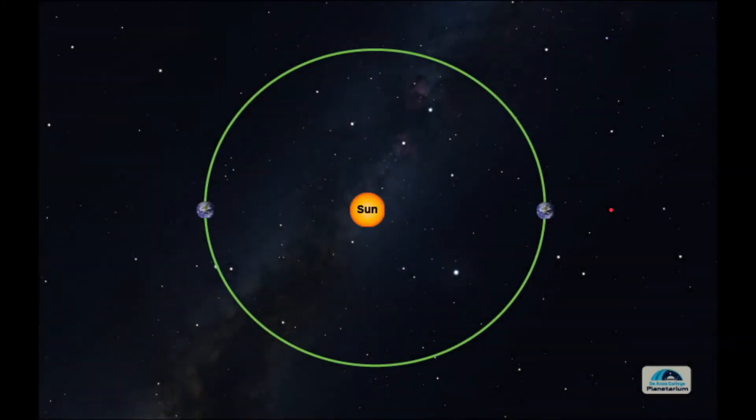But as we just saw, Earth's orbit actually looks more like this, where it's pretty circular. If you were to measure Earth's orbit carefully, you would find that it is actually not a perfect circle, but pretty close.